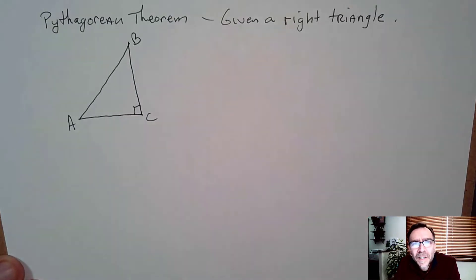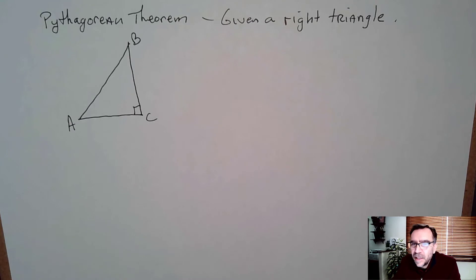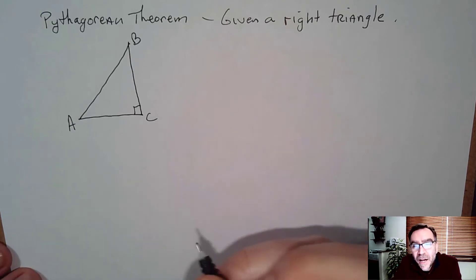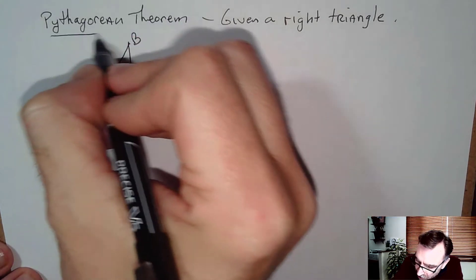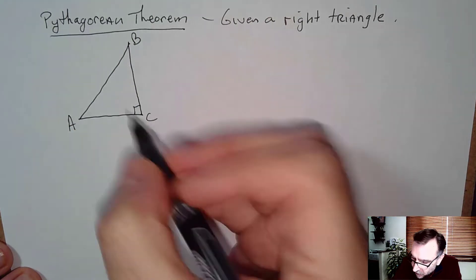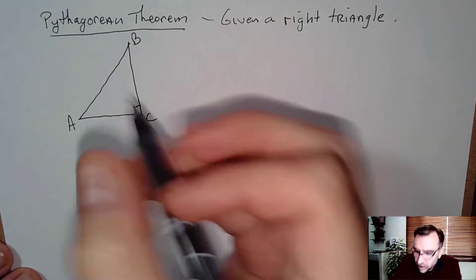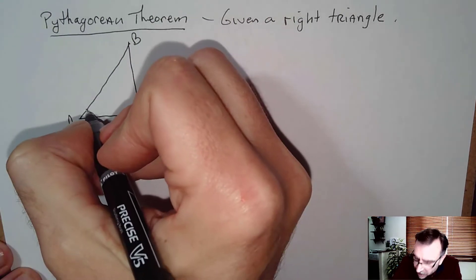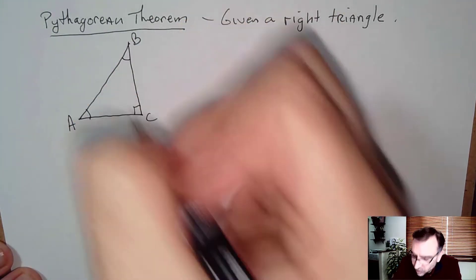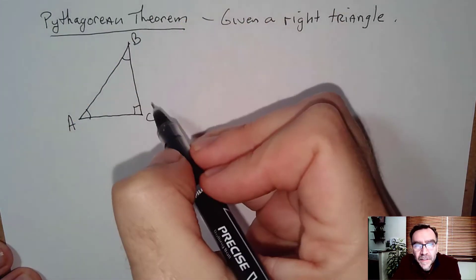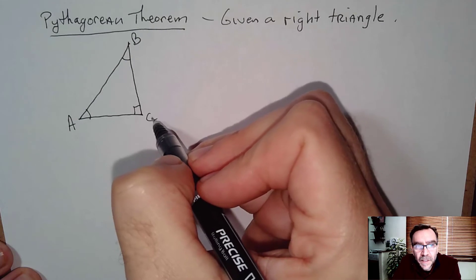Here we're going to talk about the Pythagorean Theorem. For the Pythagorean Theorem to apply you need to be given a right triangle. I have a right triangle here — we're going to label this angle A, this angle B, and this here angle C.